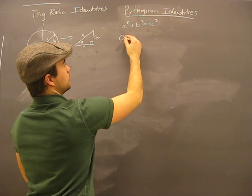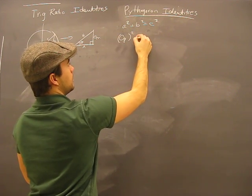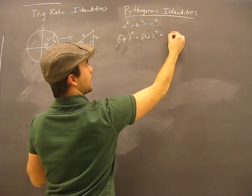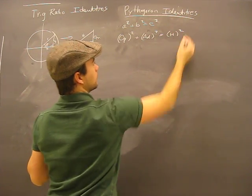Well, I'm going to rename that to be the opposite, adjacent, and hypotenuse. Okay, so there's opposite squared plus adjacent squared equals hypotenuse squared.